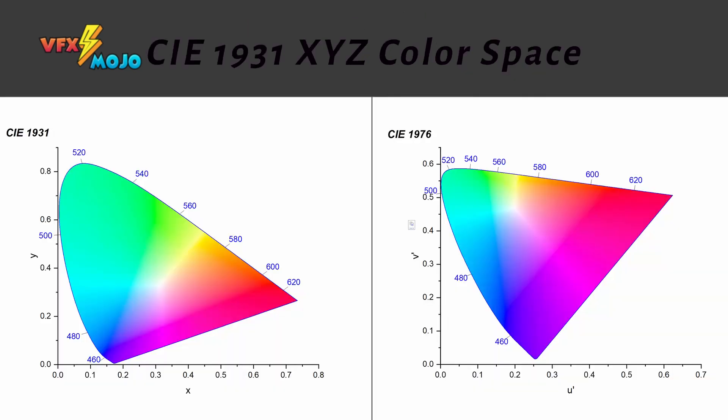To understand these concepts, we'll take a small excursion into the history of color and the components of color space. In 1931, the CIE XYZ color space was defined, which encompasses all colors a human with average eyesight can see. It serves as a standard reference against which many other color spaces are defined, including the ones we will use.